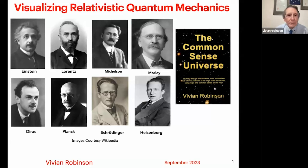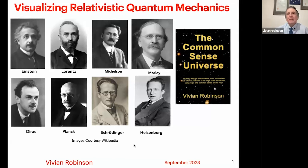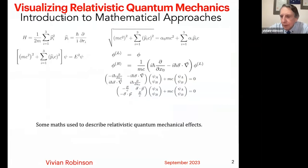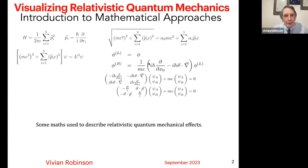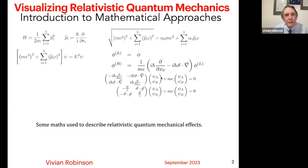Welcome to my talk on visualizing relativistic quantum mechanics. For most people, the best they do is visualize some of the names of people who contributed to relativity and quantum mechanics. This way you can put a face to the names, but I want to do a little bit more than that. Topics of quantum mechanics and relativity are generally regarded as rather complex, mostly mathematical, and here are just some examples of the maths that are used. Most people regard this as rather complex.